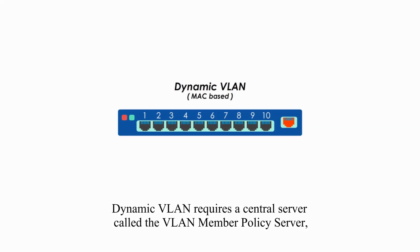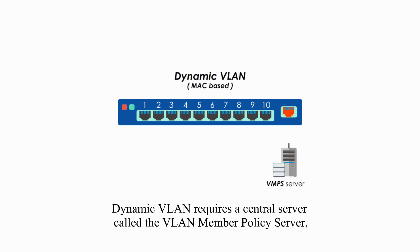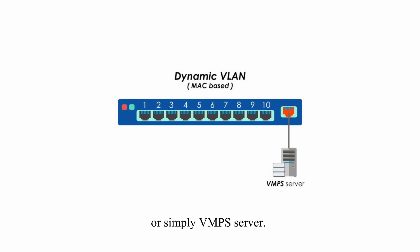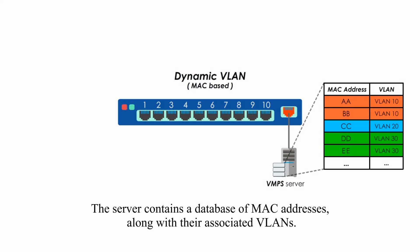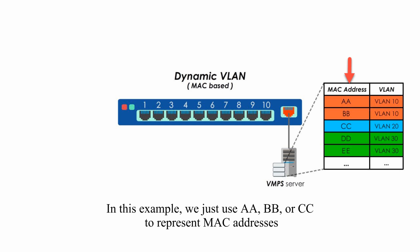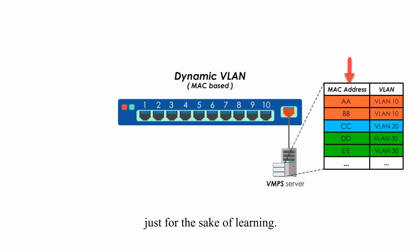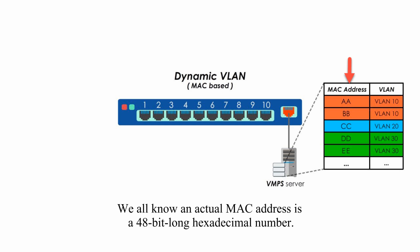Dynamic VLAN requires a central server called VLAN Member Policy Server, or simply VMPS server. The server contains a database of MAC addresses along with their associated VLANs. In this example, we use AA, BB, or CC to represent MAC addresses just for the sake of learning. We all know an actual MAC address is a 48-bit long hexadecimal number.